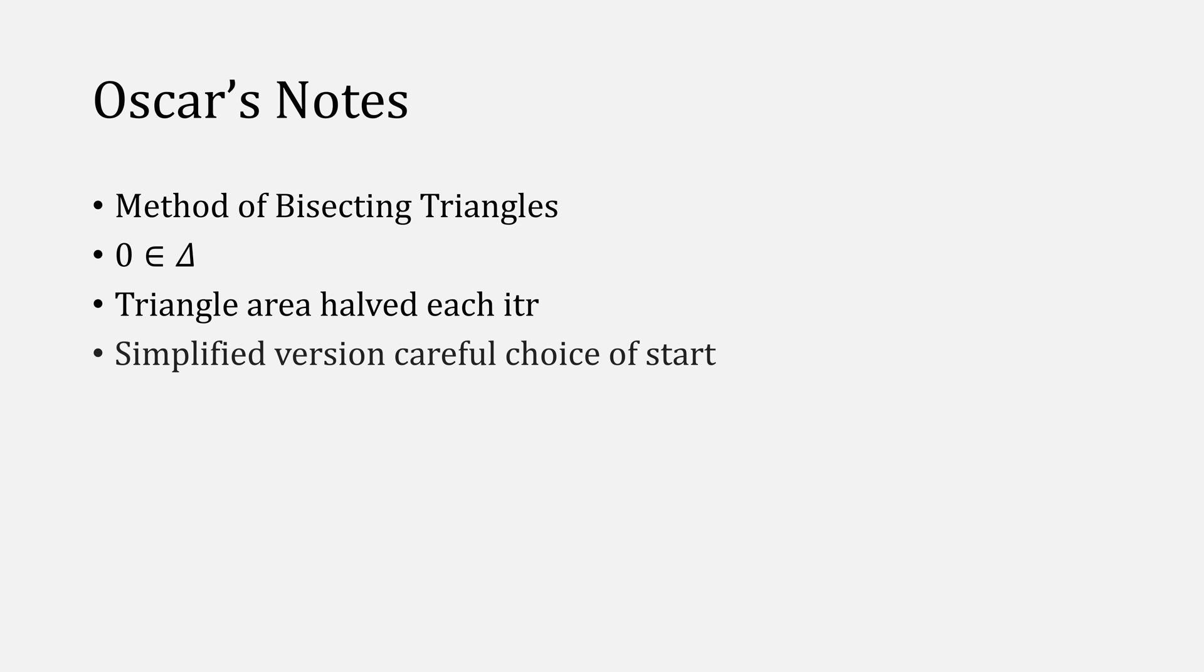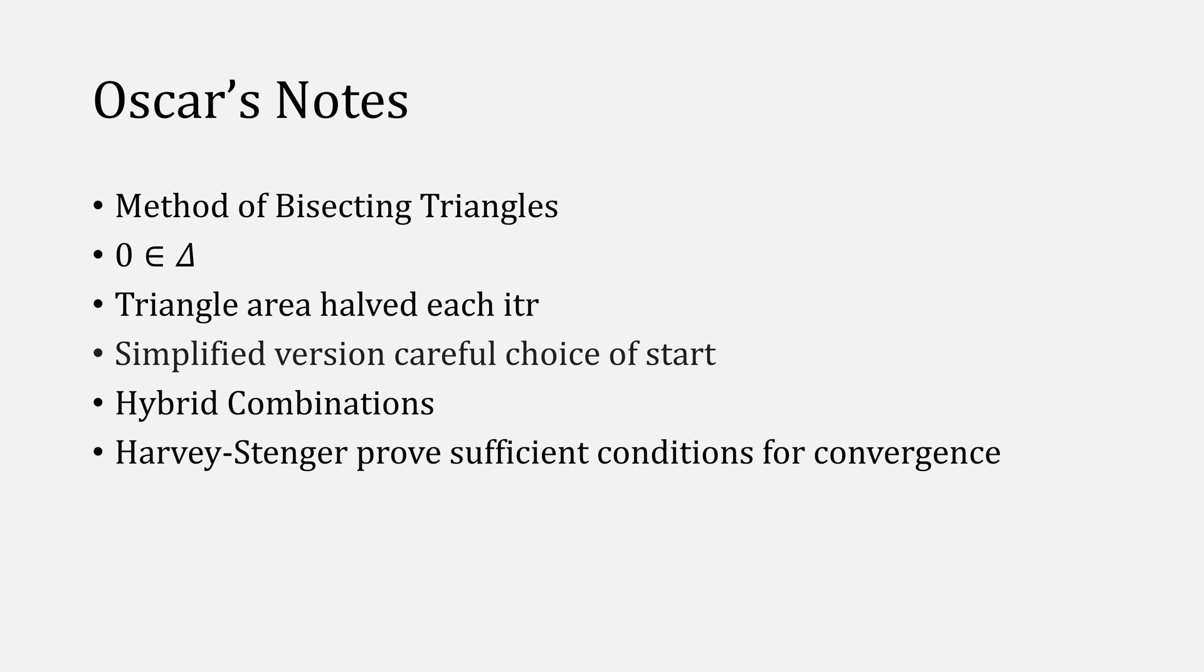To recap, this lesson covered a method of bisecting triangles to solve systems of nonlinear equations, with the key element being that we could figure out if a point was inside of our triangle. Note that our area is halved each iteration, so essentially converging linearly. Keep in mind that our simplified version of the algorithm needs to be careful where you choose your starting points. There are also different ways to hybrid bisection with other methods. Harvey and Stenger also proved in their paper sufficient conditions for convergence, which I am not going to go over.